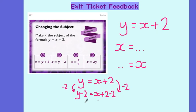Plus 2 take away 2 cancels out. So I've got y take away 2 is equal to x, which I could also write as x equals y take away 2. So the correct answer for the second one was b.